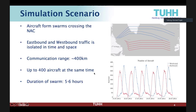Also, as aircraft are flying quite high, they have a big communication range. For this evaluation we use 400 kilometers, though even more is possible. If we look at the lower graph, this is a time series showing how many aircraft are actually in this region over time, and here we see the separation in time — only after the eastbound swarm is arriving do we see the westbound swarm coming. We can also see from this plot that a swarm takes about five to six hours to fly from one coast to the other.